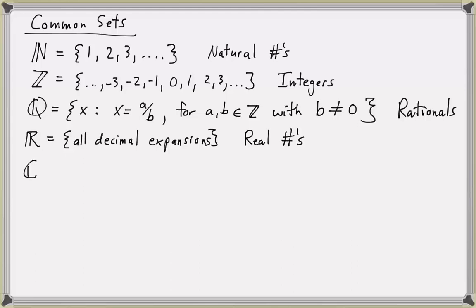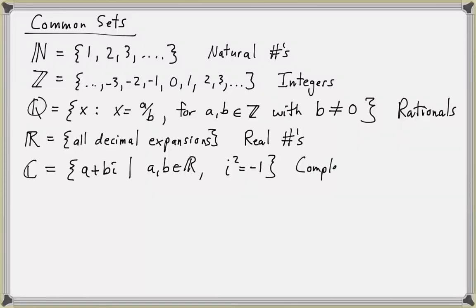Another important set, which is kind of an extension of the real numbers, is the complex numbers. Every complex number can be written in the form a plus bi, where a and b are real numbers and i represents the square root of negative one. We can also write this as i squared equals negative one. So the imaginary unit i makes up the set of complex numbers. It might also be advantageous to talk about positive integers or positive rationals or positive real numbers.